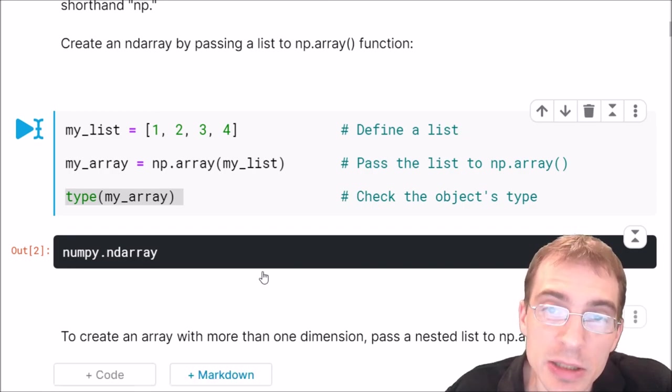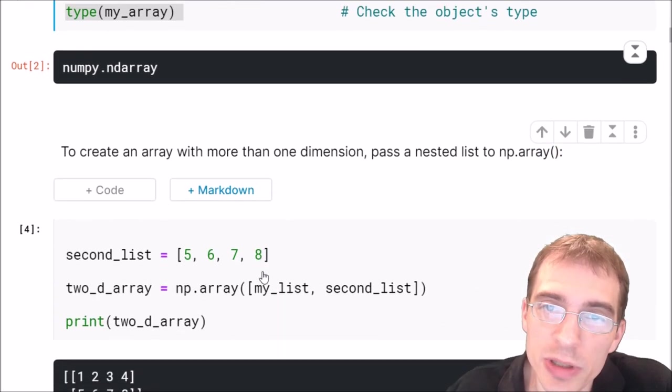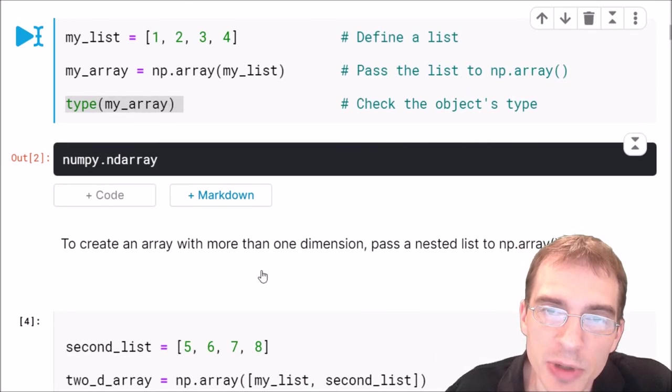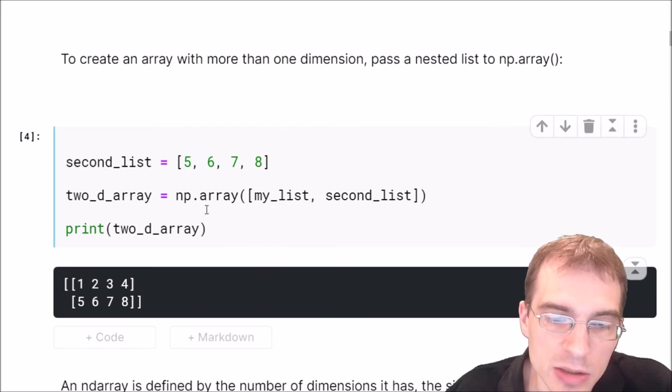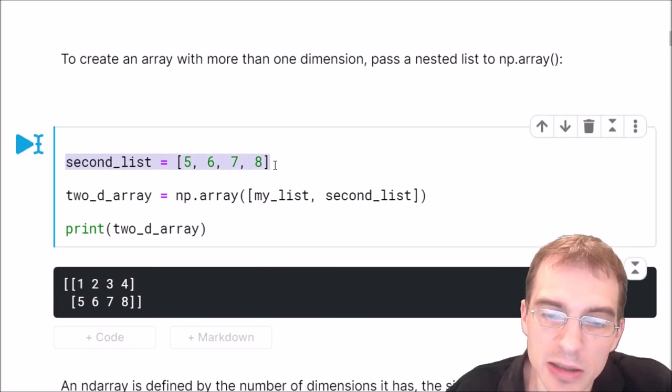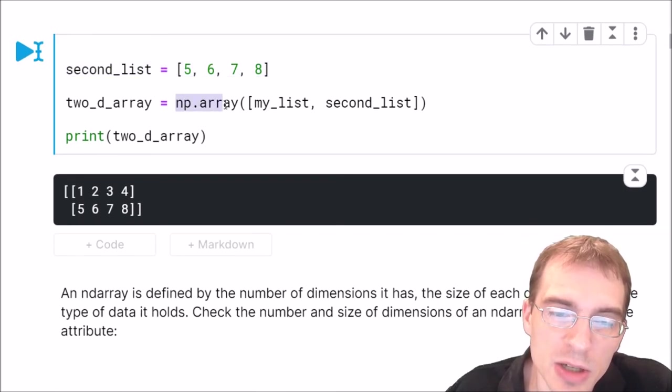If you would like to construct a numpy array with more than one dimension you can simply pass in a comma separated list of the different lists that contain the data you want. Here we're going to define a second list and now we're going to make a two-dimensional array constructed by a list of lists. We're passing to numpy.array the list that we want to construct the dimensions with. Here is the first list we made earlier and the second one and this will create a 2D array.